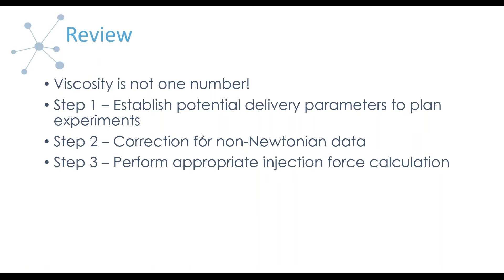We have a question: if the sample is non-Newtonian, how many shear rates should we measure? Ideally, you'd want to measure up to where you think the injection behavior would truly be, and at lower rates to see where the Newtonian plateau exists. You want enough points to capture the transition — the critical shear rate, the onset of shear thinning. It depends on how many decades in shear rate you're measuring. I would recommend maybe five points per decade in shear rate, but it could vary.